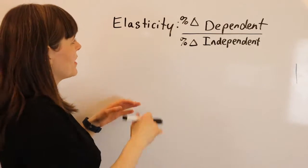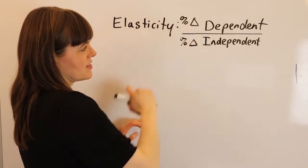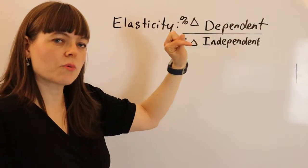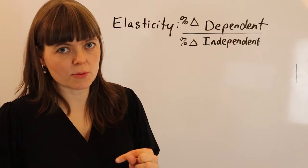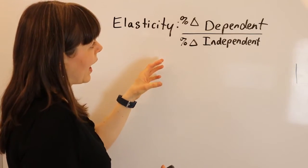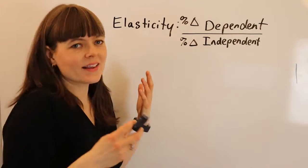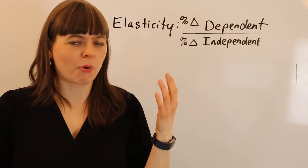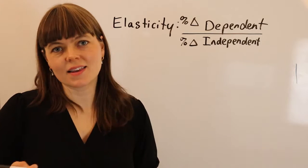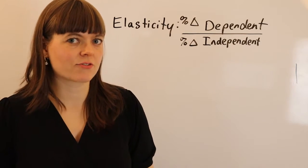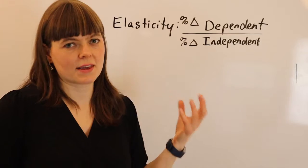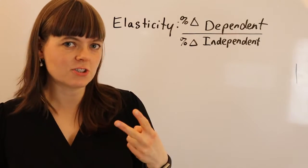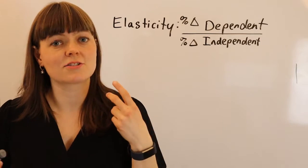Just to remind you, elasticity is the percent change in the dependent variable divided by the percent change in the independent variable. So any two variables that have a relationship in your model are going to have an inherent elasticity. That elasticity may not be measurable, but that's not really the point. One of the exciting things about economic modeling is that you don't need things to be measurable in order to think about causality. We need to remind ourselves that elasticity has two features: magnitude and direction.